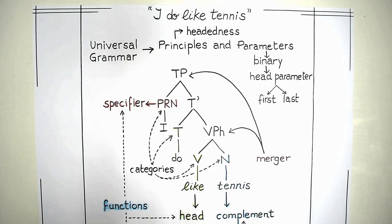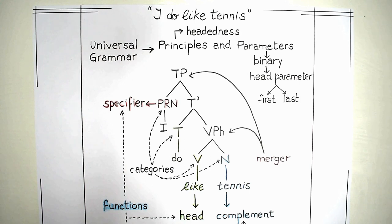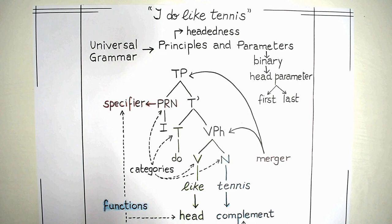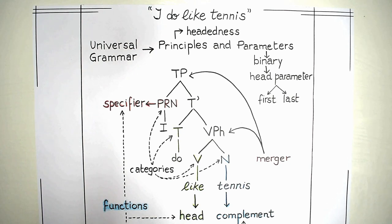Hi there. This is our second class on Generative Grammar, Chomsky and Linguistics from the Minimalist Approach. What we will do today is review some of the things we have said, and then move on to discuss issues we have not discussed so far. By the end of the class, I hope that what we said in class one would be clearer, and that we can get familiarized with some new categories and operations that take place when we derive sentences. There will be a lot of questions, but hopefully things will be much clearer. So let's start reviewing.